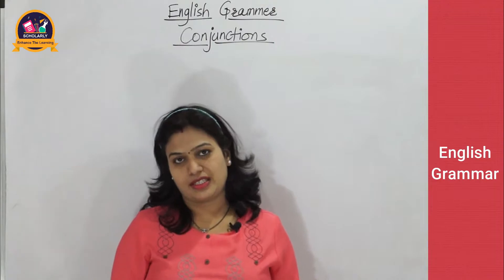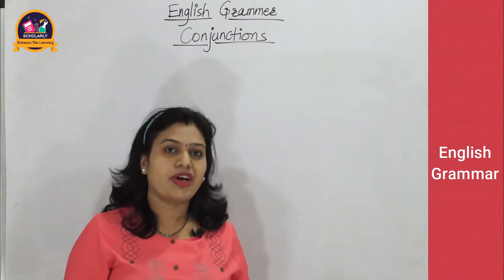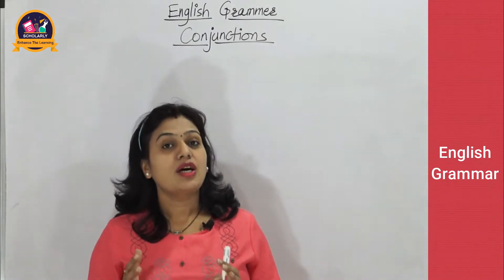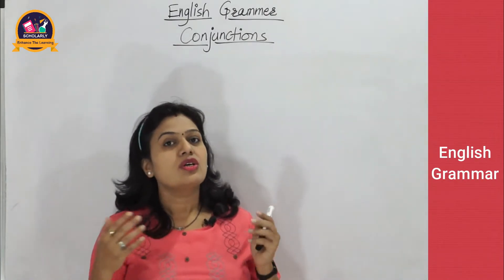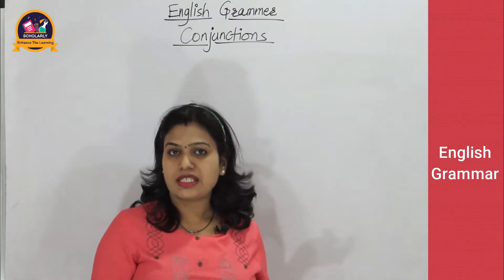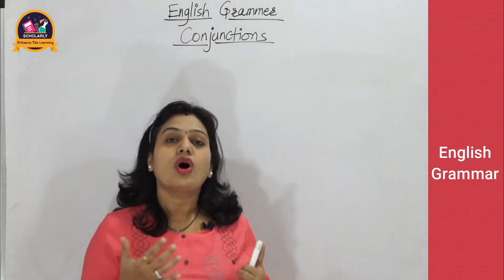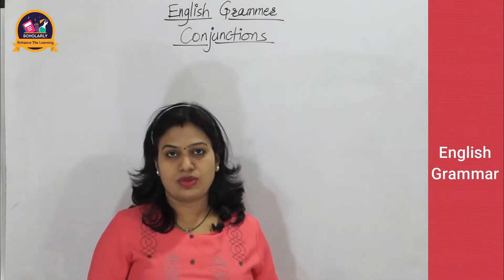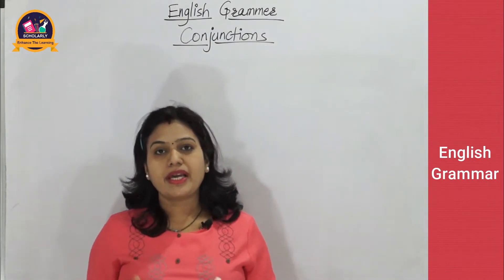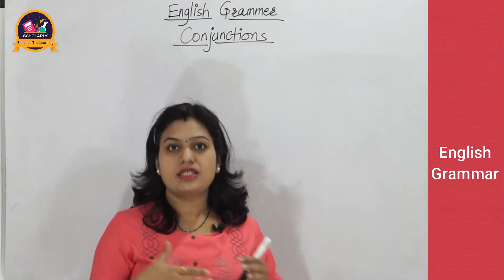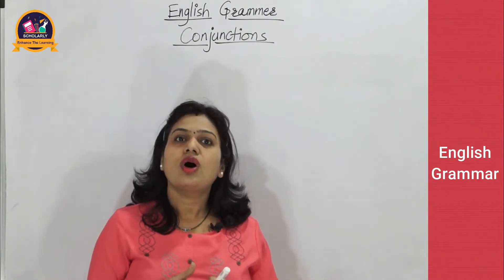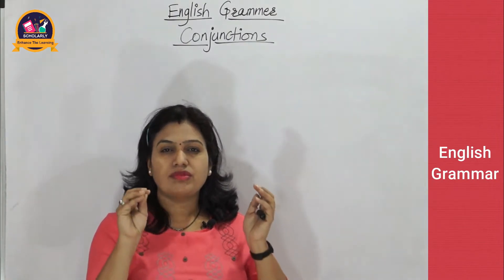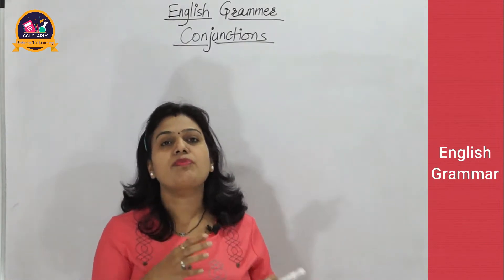So, conjunctions. We can define conjunctions as: conjunctions are the words which join two words, phrases, clauses, or even separate or independent sentences. They make a link between words or group of words or independent clauses, and tell us the relationship between them.